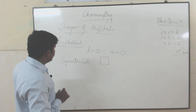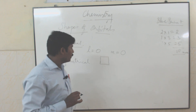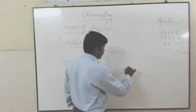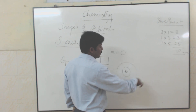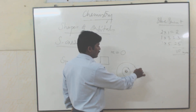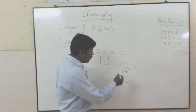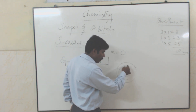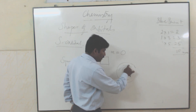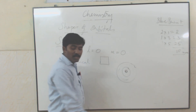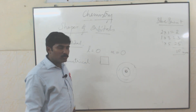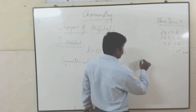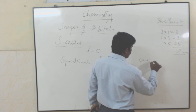Now think about nodes. What does a node mean? Consider the structure of an atom: this is the nucleus, then the first shell (K shell), second shell (L shell), and so on. A node is the region in between two shells where there is zero probability of finding electrons. The common formula for calculating nodes is n minus 1.